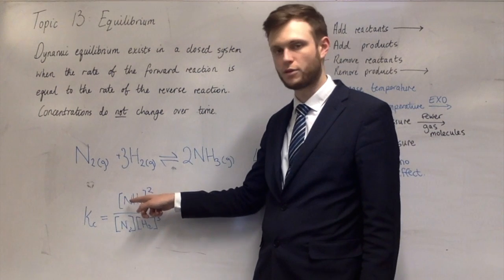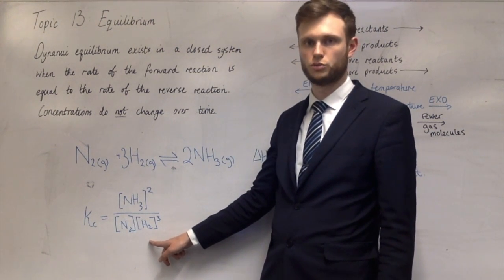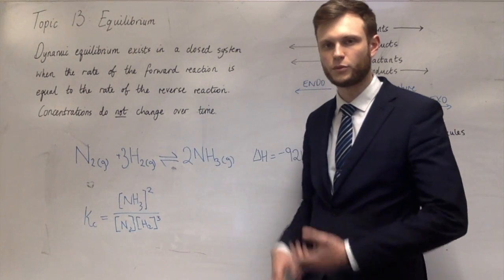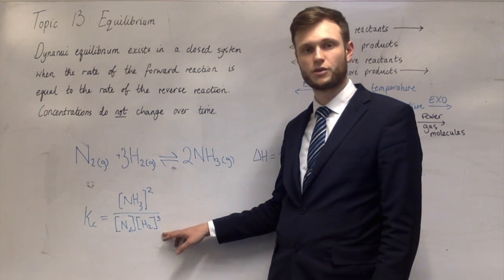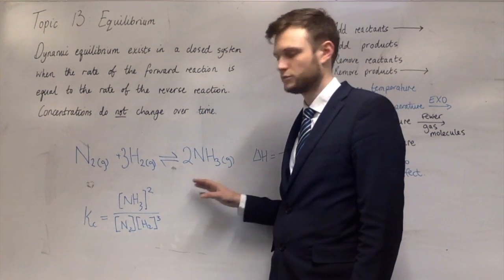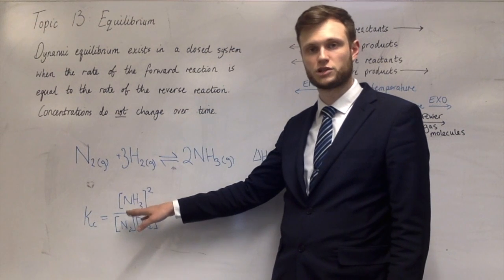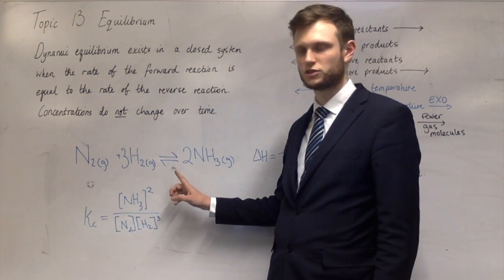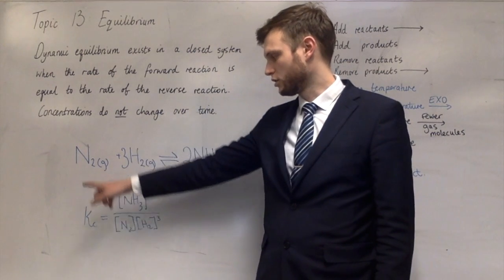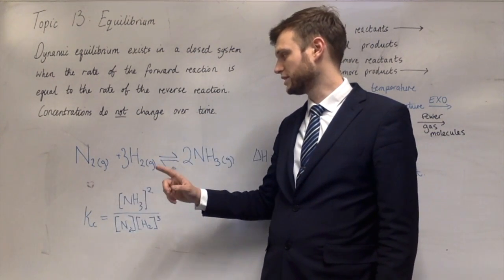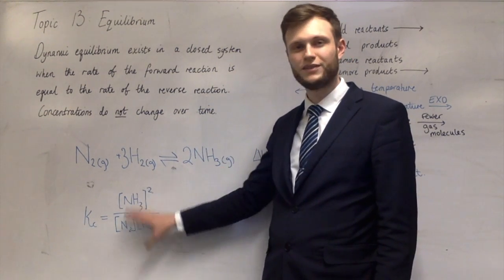The products of the reaction go on the top of the equilibrium expression and the reactants go on the bottom. Square brackets mean concentration. So Kc equals the concentration of NH₃ squared, divided by the concentration of N₂ times the concentration of H₂ cubed. Since there are two ammonias, you write the concentration of ammonia raised to the power of its stoichiometric coefficient. On the bottom, nitrogen has a coefficient of one, so it's just the concentration of N₂, and there are three hydrogens so it's the concentration of H₂ raised to the power of three.